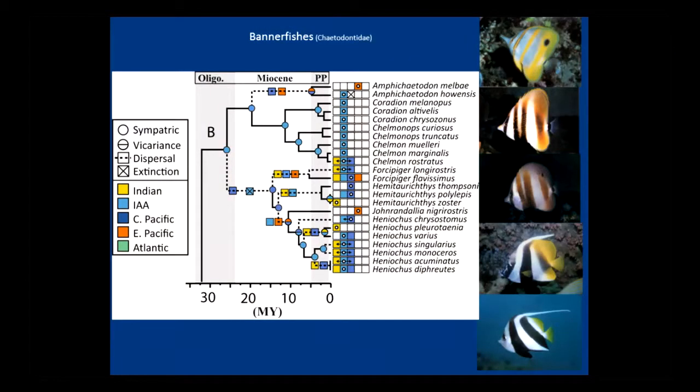We can also try and address where the actual individuals we see today came from. Using TV as our guide, we look at something like CSI — we take DNA out of the specimens and reconstruct their relationships. At the same time, we can put onto that where they occur and reconstruct their history. You can work out where people are from in terms of their DNA, and you can do exactly the same thing with fish.